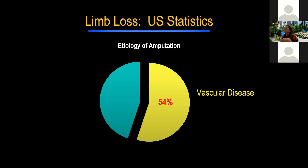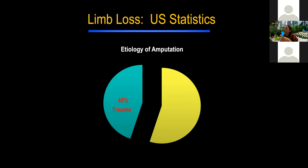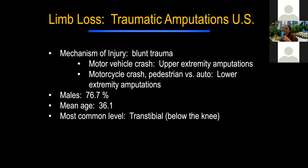The other cause of amputation is trauma, which we definitely see here. The most common cause is a motor vehicle crash for upper extremity and a motorcycle crash or pedestrian versus auto for lower extremity amputations. It tends to be young males. If somebody asks you who's at most risk — whether it's amputation, spinal cord injury, or traumatic brain injury — it's going to be young males. The most common level is a transtibial amputation, which we more commonly call a below-the-knee amputation.